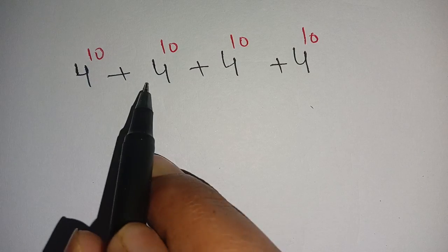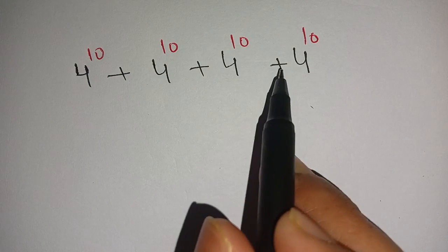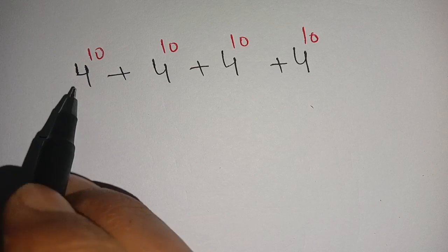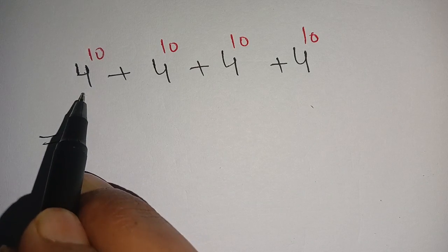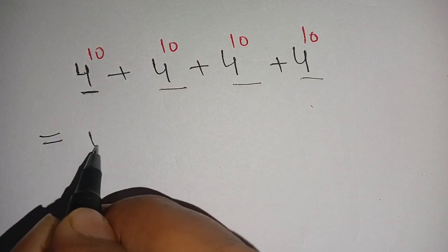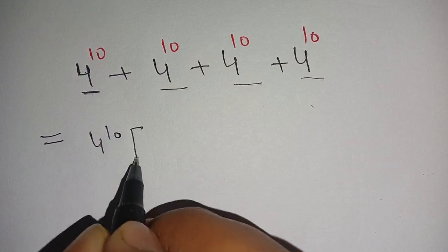How to solve 4^10 + 4^10 + 4^10 + 4^10. Let us solve this. We can write this as 4^10 common from each term, so we get 4^10 here.